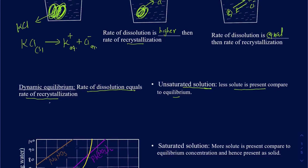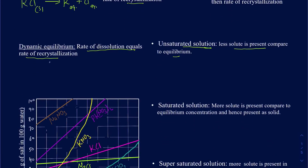Once you have enough solid dissolved in a given amount of solvent, no more solute can be dissolved — that's when you reach dynamic equilibrium, and that's called a saturated solution. In this state, if you have more solute added, some solid will precipitate. The rate of dissolution equals the rate of recrystallization, and you may see solid settled at the bottom.